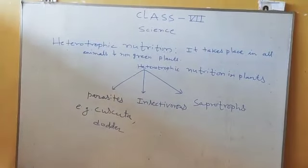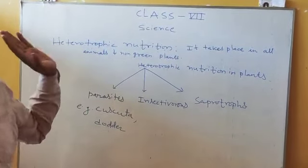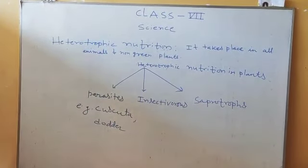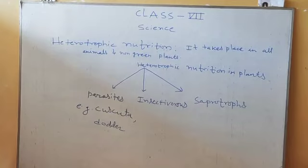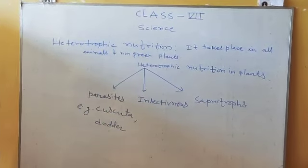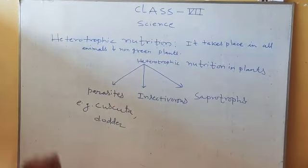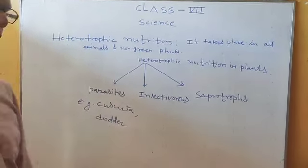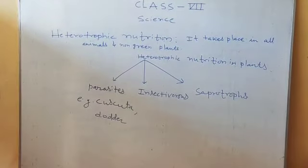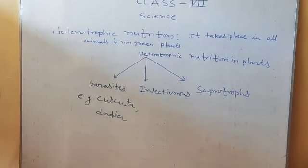Heterotrophic nutrition takes place in all animals and in non-green plants. This type of nutrition takes place only in animals and non-green plants.